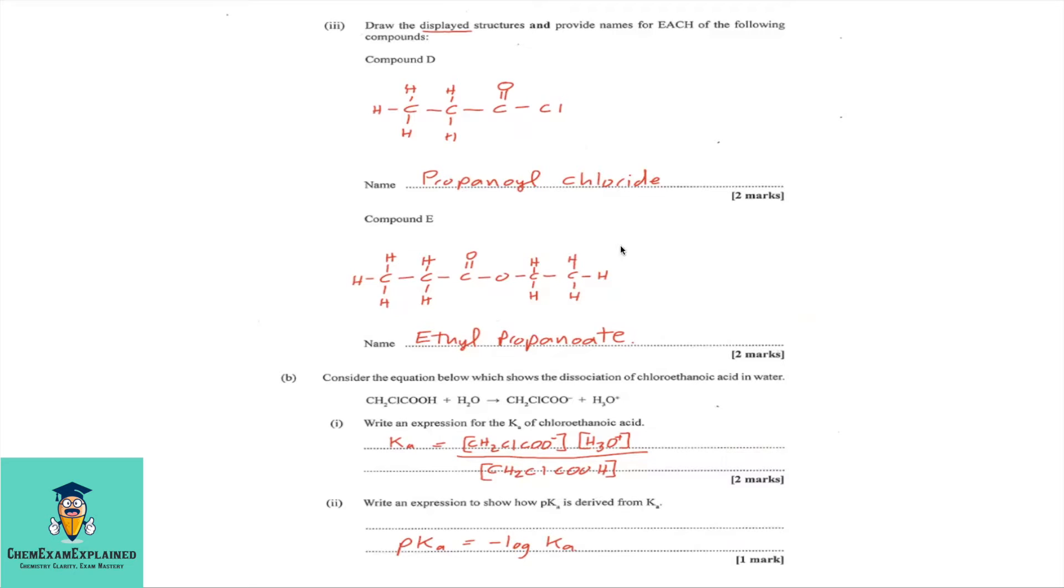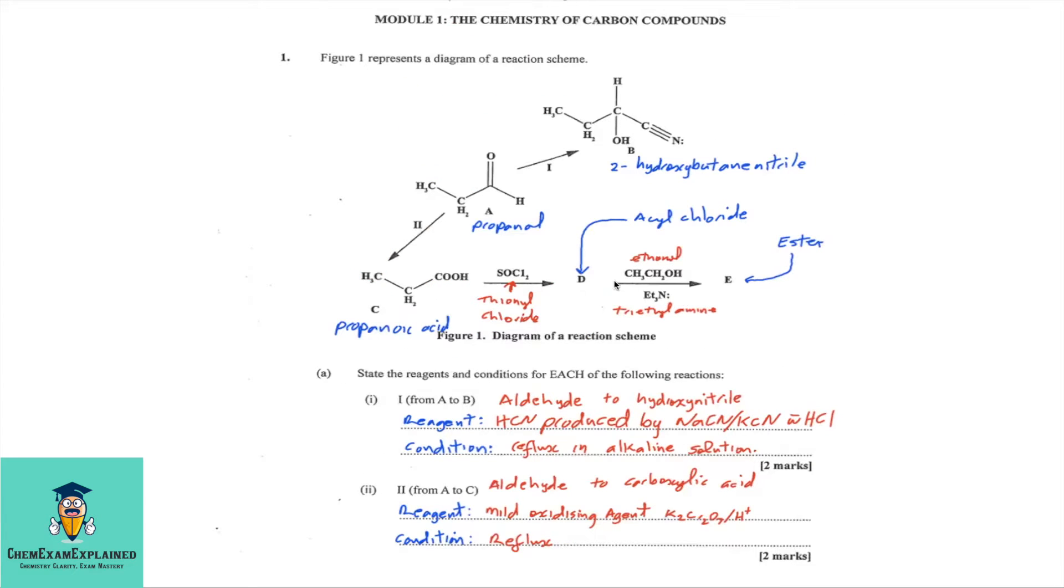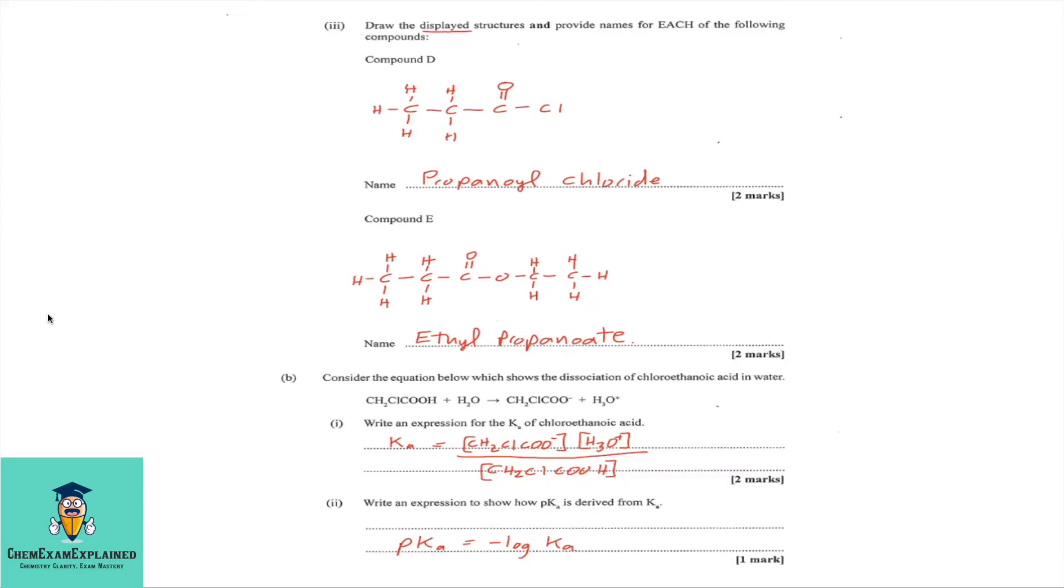Compound E. Let's go back again and have a look at the structure. So, you'll notice that you have your acyl chloride that we just formed for compound D. Now, we are reacting that acyl chloride with ethanol in triethylamine. And we are going to form an ester. Now, in forming the ester, we would start with our acyl chloride propanoyl chloride. And we react that with ethanol. And you'll see where we remove HCl. Then forming our ester.